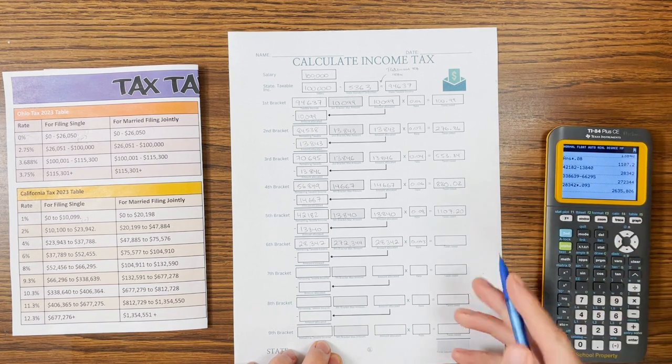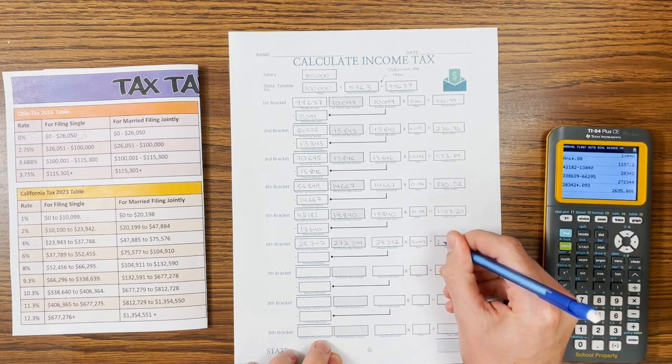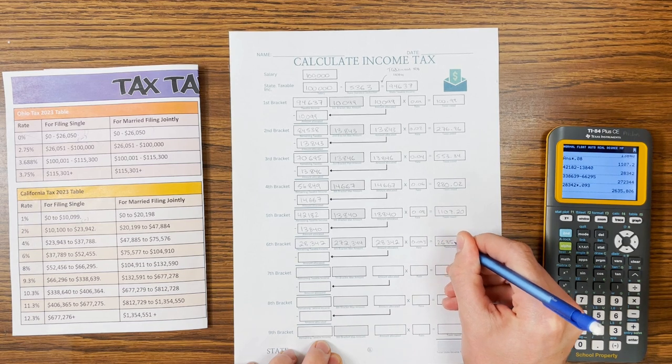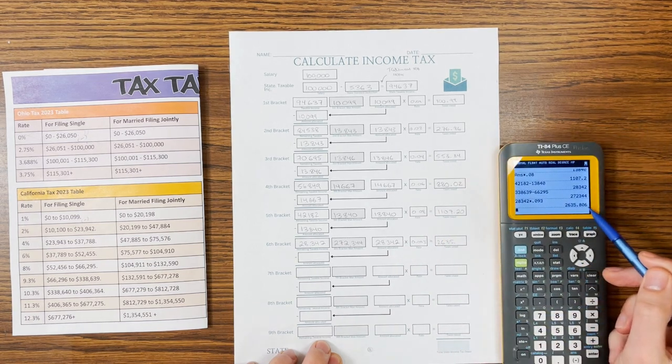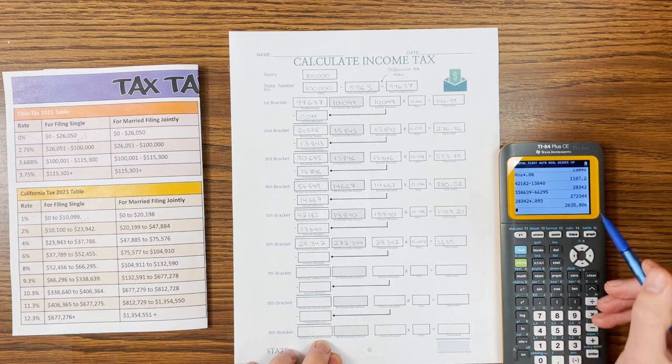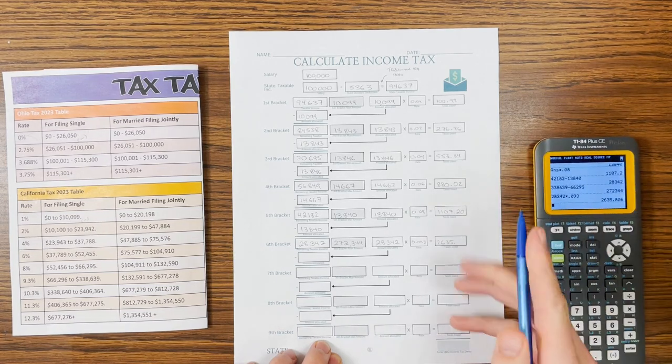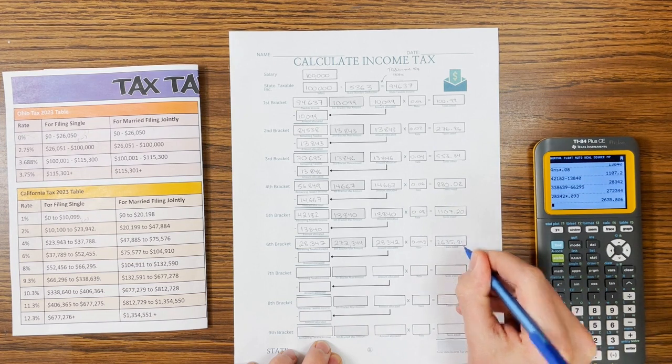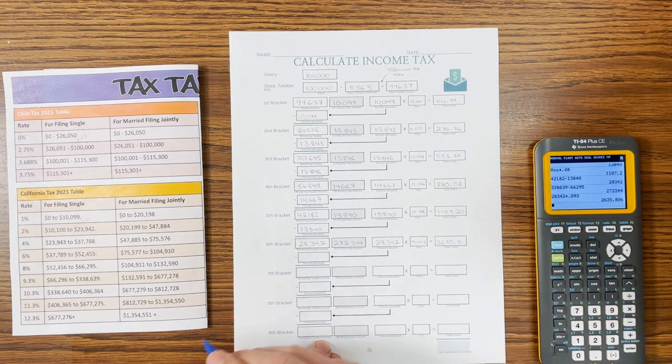and now we're going to do some rounding here. So we have 80 and then .6 cents. This is going to round up to the nearest cent, so we have .81. All right, we've taxed everything.